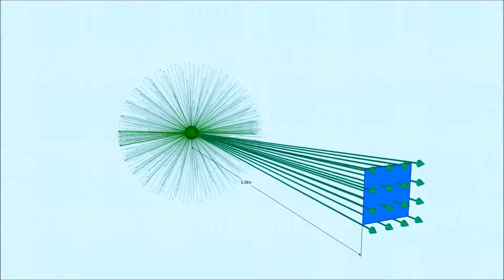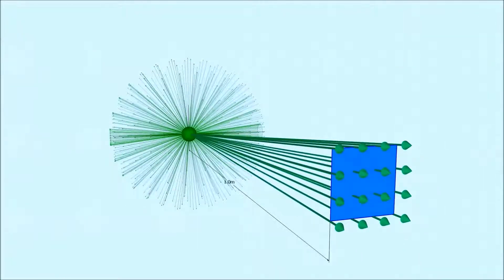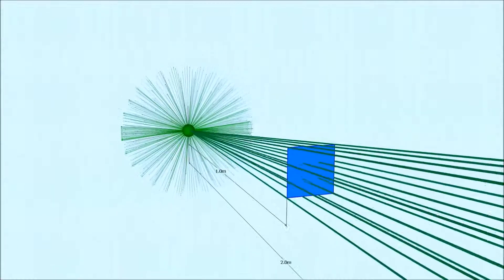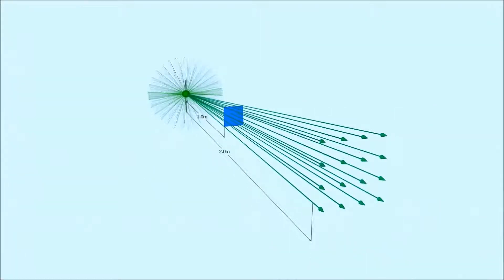At a distance of 1 metre from the source we draw a square that just intersects all 16 rays. Zooming further out, at 2 metres we draw a square again and we can see now that those 16 rays pass through an area 4 times as large.